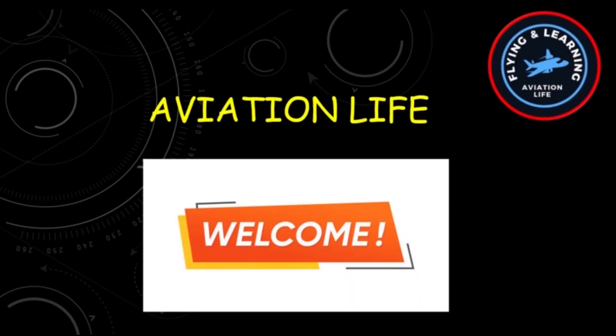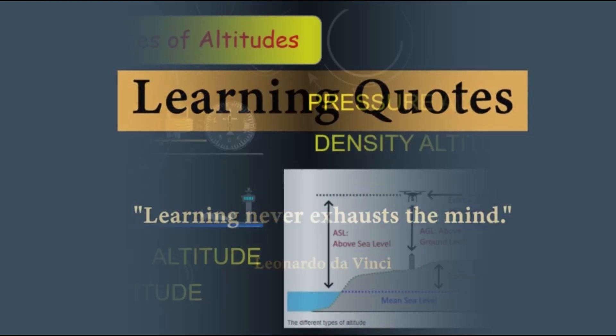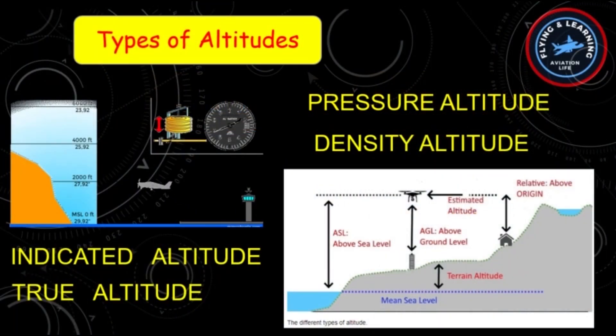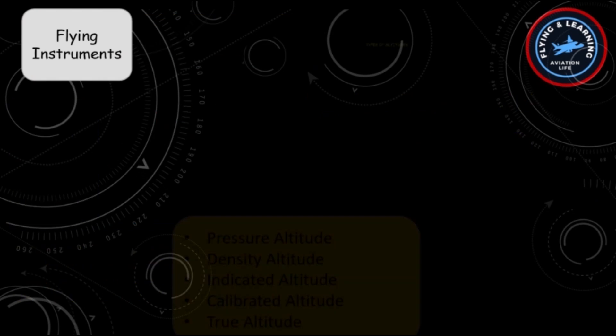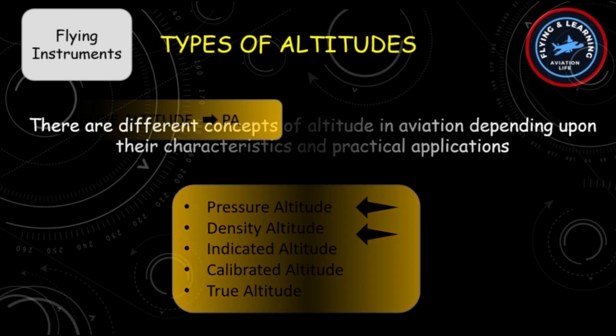Hello friends and welcome to the learning platform Aviation Life. Before the start of today's video, remember: learning never exhausts the mind. Today we will learn about different types of altitudes used in aviation. There are different concepts of altitude in aviation depending upon their characteristics and practical applications. It includes pressure altitude, density altitude, indicated altitude, calibrated altitude, and true altitude. The terms pressure altitude and density altitude are used for understanding aircraft performance. Let's start with pressure altitude.